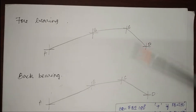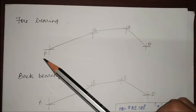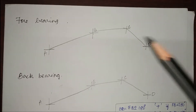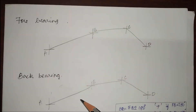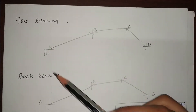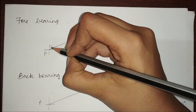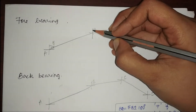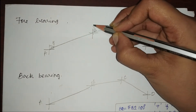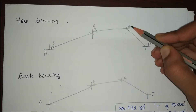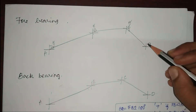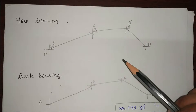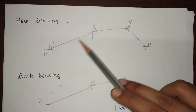I have an open traverse here. The lines are AB, BC, and CD, and these are the control points A, B, C, and D. I have to find the forebearing and back bearing of these lines. The forebearing of AB is this angle theta. The forebearing of BC is measured from the north to the line. From this we can see that the forebearing is measured in the direction of progression of the survey.